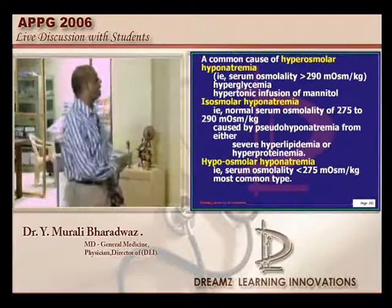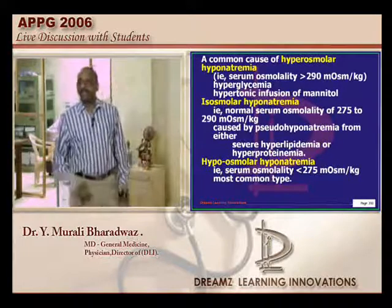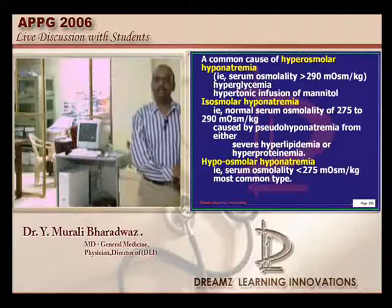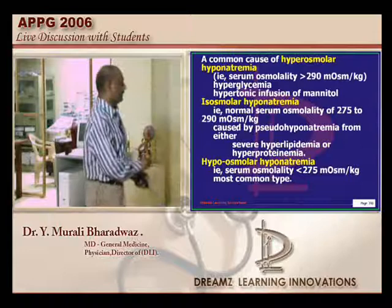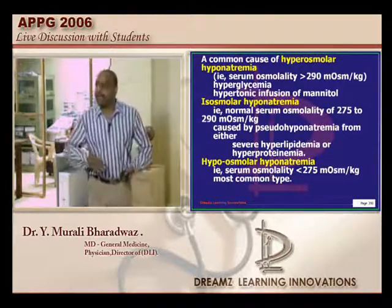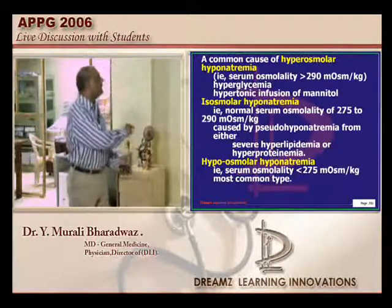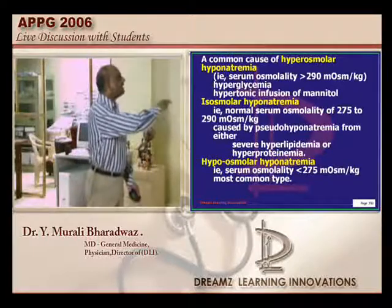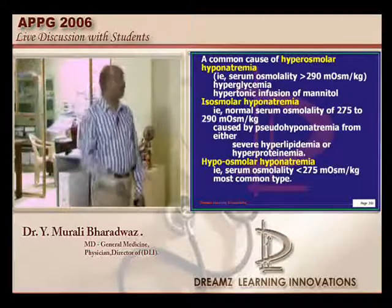For iso-osmolar hyponatremia, two situations: if the patient has hyperlipidemia — for example, someone eating excessively — or hyperproteinemia due to multiple myeloma or a paraproteinemic state. In these situations, iso-osmolar hyponatremia can occur. Both these varieties are a rare type of hyponatremia. What is the most common variety of hyponatremia? It is hypo-osmolar hyponatremia.